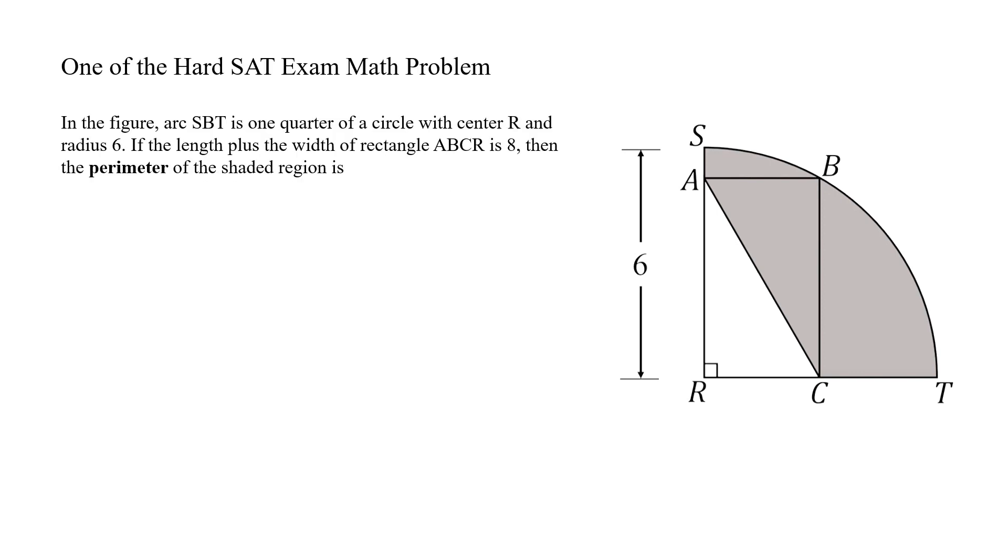Let's begin to solve the question. According to the question, length plus width of the rectangle is equal to 8, and radius of this one quarter of a circle is 6.